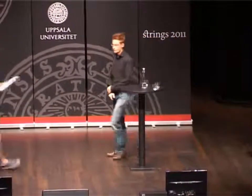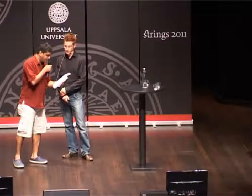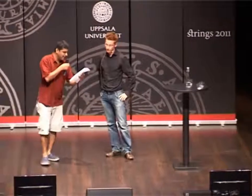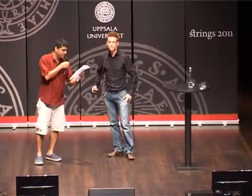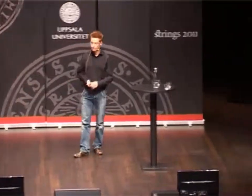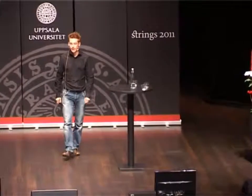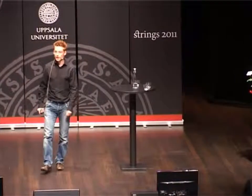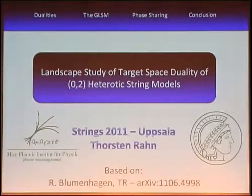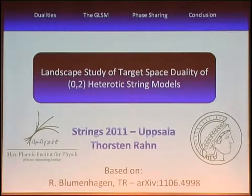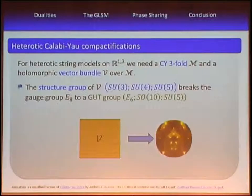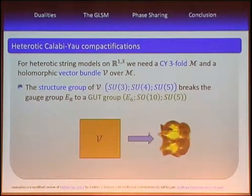Our next speaker is Thorsten Rahn from the Max Planck Institute in Munich. The title is 'Landscape Study of Target Space Duality of (0,2) Heterotic Strings.' I want to present work done with Ralf Blumenhagen. I will talk about heterotic Calabi-Yau compactifications and dualities thereof. For a heterotic compactification, we need not only a Calabi-Yau but also a vector bundle over that Calabi-Yau, and we want this vector bundle to break our gauge group E_8 down to some GUT group.